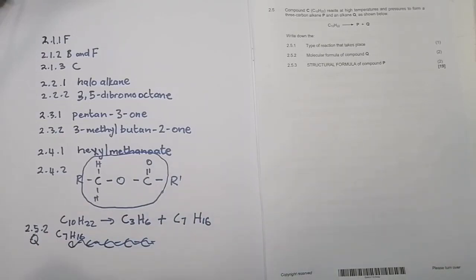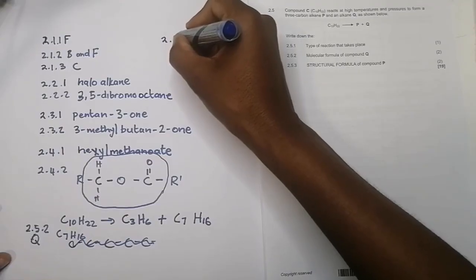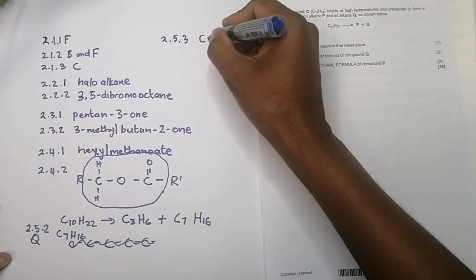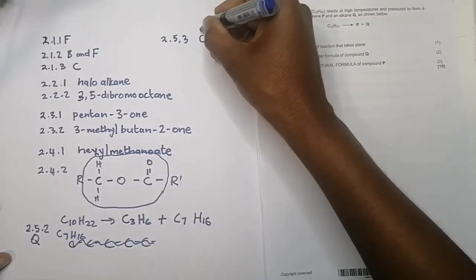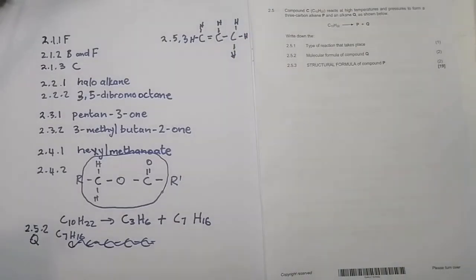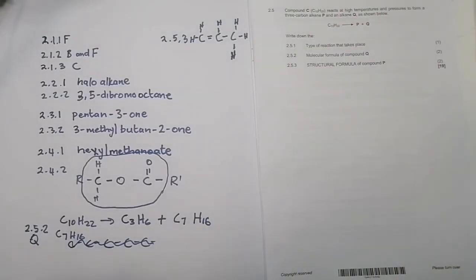They say write down the structural formula of compound P. For 2.5.3, remember we are talking three carbons with a double bond — so it would be propene. Just remember that the number of bonds around each carbon should be four. And that is essentially how we would have gotten all those 19 marks.